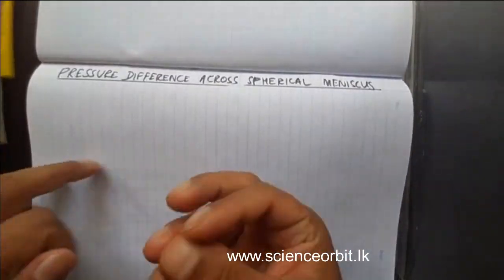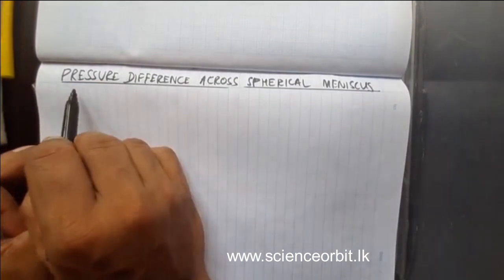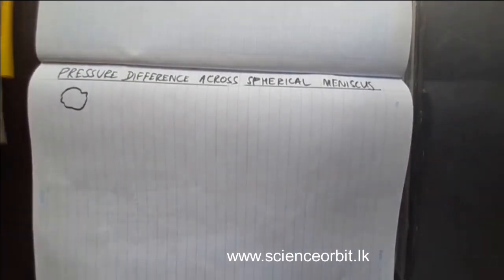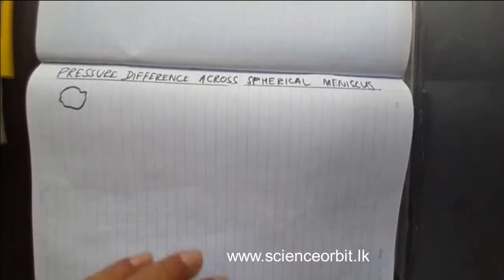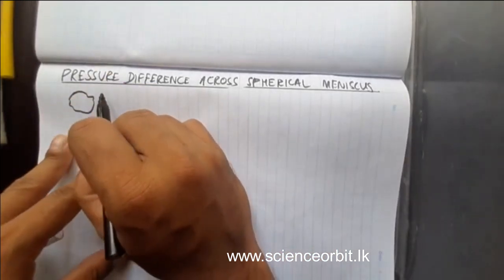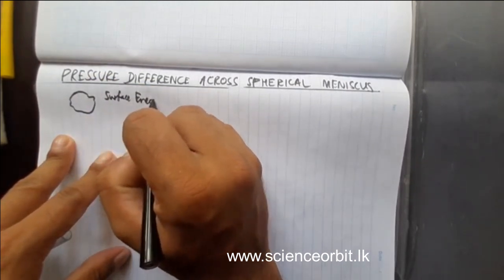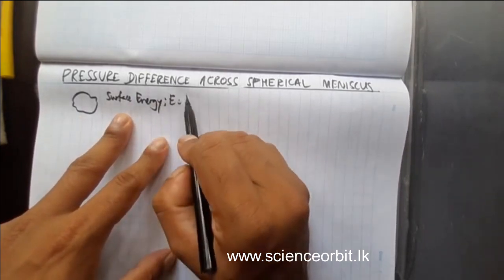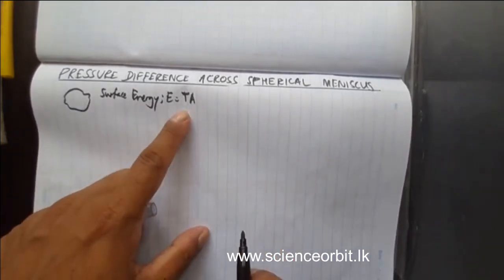When you have a certain volume of liquid, it can take any shape, but we learnt something called surface energy. I hope you all can remember the equation for surface energy. Surface energy — we took it as capital E — and that is equal to surface tension into area. This is the equation for surface energy, and this A is not just area, it is actually surface area.